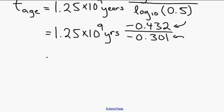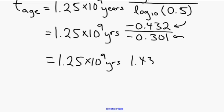Let's continue calculating. So 1.25 times 10 to the 9 years times this ratio works out to be 1.435.